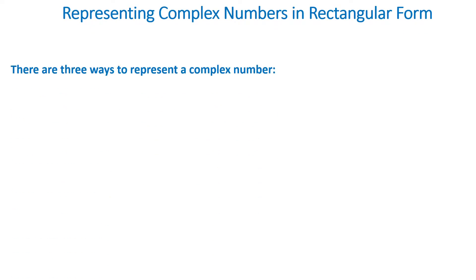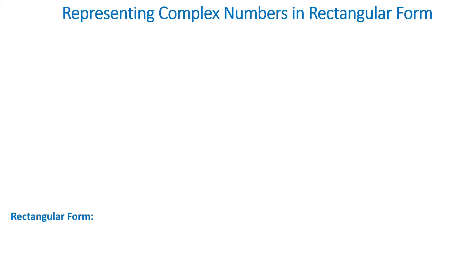Hello and welcome to Engineering Simple. There are three ways to represent a complex number: the rectangular form, exponential form, and polar form. Today I'll just talk about the rectangular form. In the next lectures I'll talk about the other two forms.